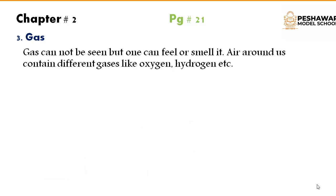Next is gas. Gas cannot be seen but one can feel or smell it. Air around us contains different gases like oxygen, hydrogen, etc. Gas is the thing which cannot be seen or touched — we can only feel or smell it. For example, when you turn on the stove in the kitchen for cooking something, you can only feel the smell of the gas but you cannot touch or see it.